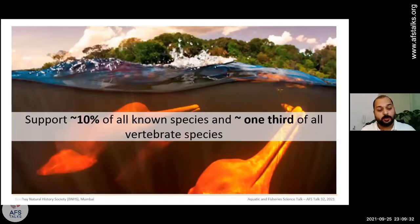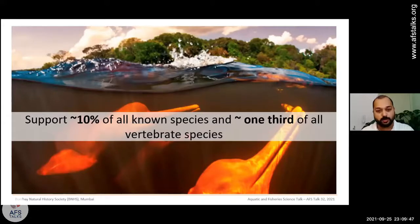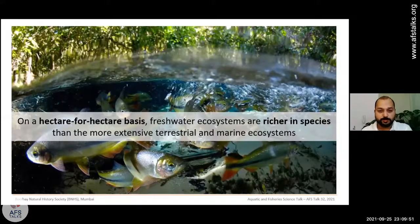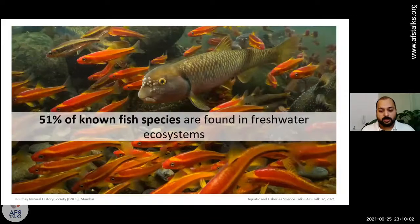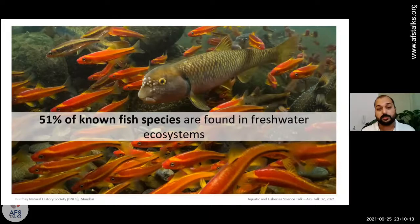Although freshwater is a rare ecosystem, it supports almost 10 percent of all known species and almost one-third of all vertebrate species. In size-to-size comparison, freshwater ecosystems are richer in abundance and species diversity compared to terrestrial and marine counterparts. When it comes to fish, almost 51 percent of all fish species are found in freshwater ecosystems — you can guess how diverse freshwater ecosystems are compared to marine.